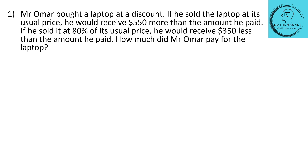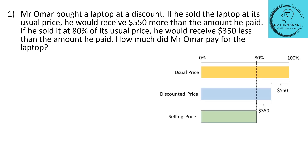Let's understand with the bar model. The usual price is 100%. Assume the discounted price is some lower percent. If Omar sold the laptop at its usual price, he gets $550 more than what he spent — meaning he received a discount of $550 from the usual price. He paid $550 less than the usual price to buy this laptop.